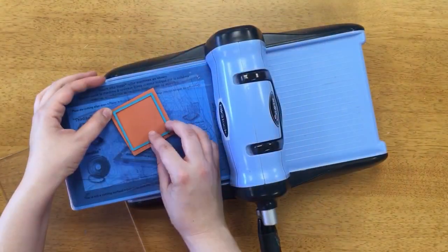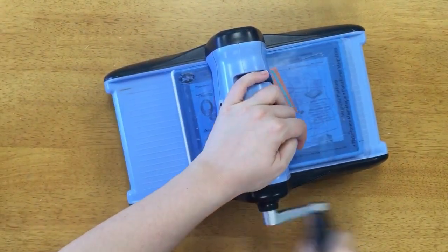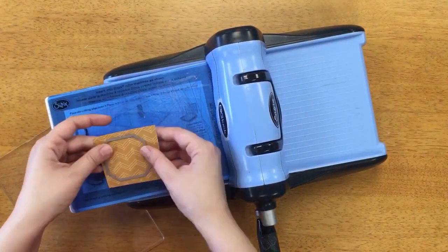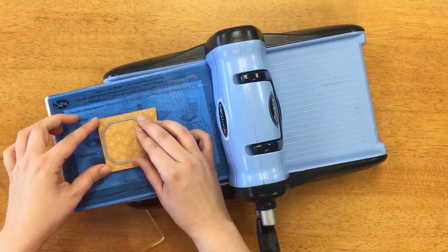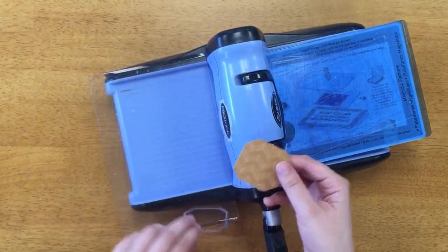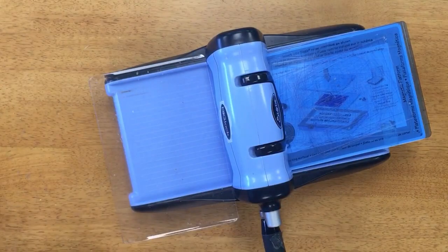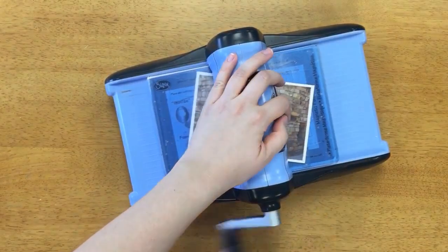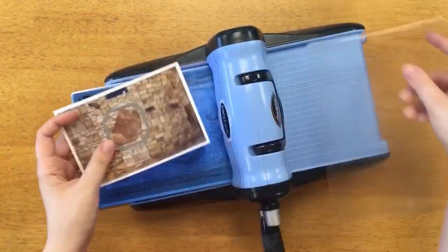For my last design I'm going to cut my background with the 2x2 square die from set A and these are the two smallest dies from the X-Factor set. So with my biggest one I'm cutting it with pattern paper and for my last piece I'm cutting this photo as a fun little detail on my layout.